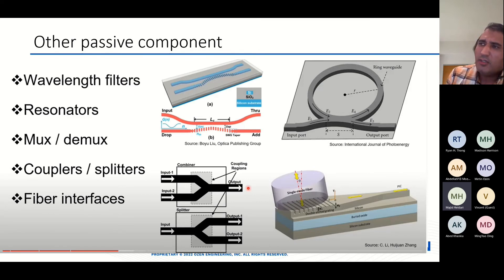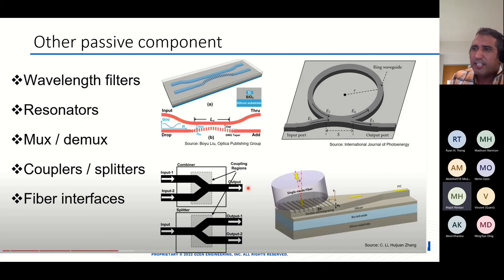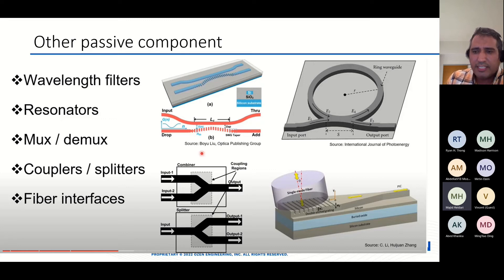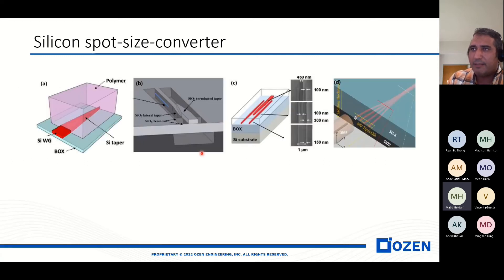Regarding other passive components, we have wavelength filters, resonators, mux, demux, couplers, splitters, and fiber interfaces. These components can be used for silicon photonics and photonic integrated circuits.